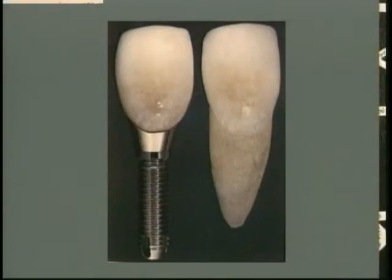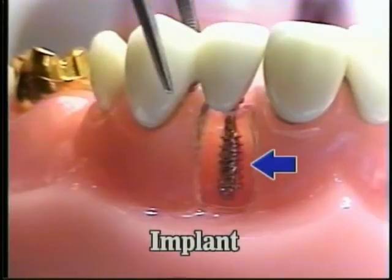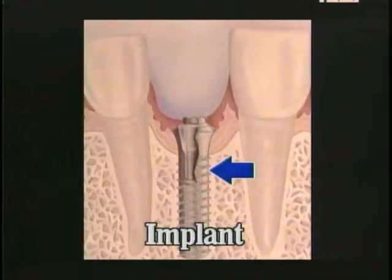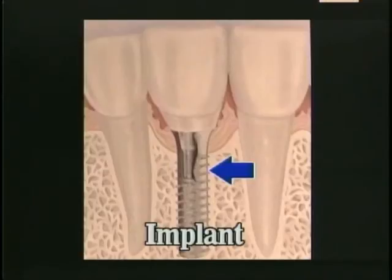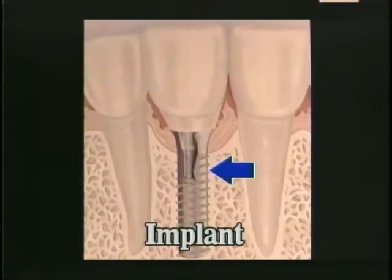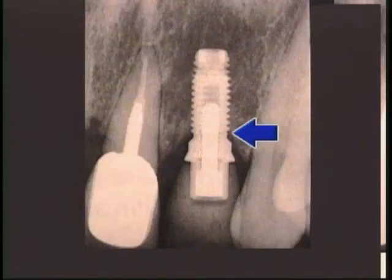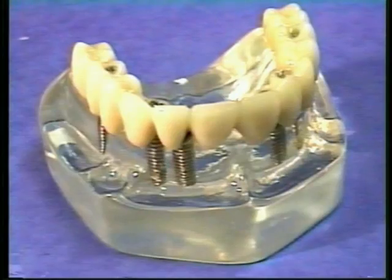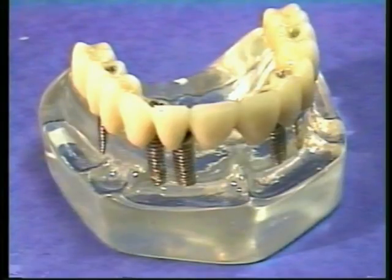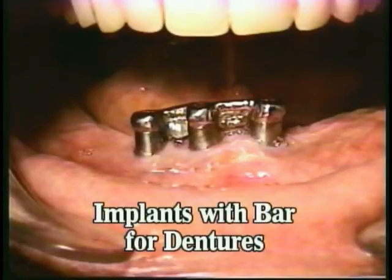Using implants is another way to replace a single tooth or multiple missing teeth. Implants are embedded in the patient's bone to replace the root of a missing tooth. On this x-ray, we can see that the tooth on the left has been restored with endodontic treatment, a post and core, and a porcelain veneer crown. The tooth on the right has a dental implant restored with an all-porcelain crown. Another use of implants is as an abutment in the construction of a fixed bridge. Implants can also be used to stabilize full dentures.